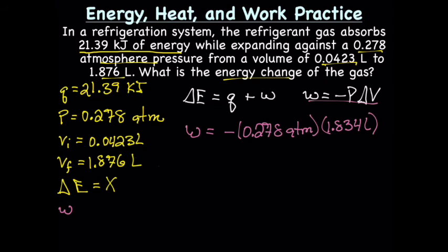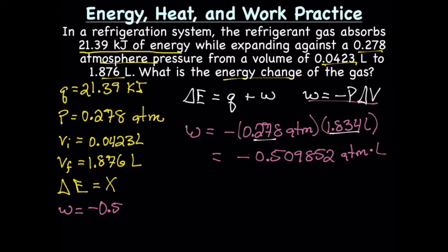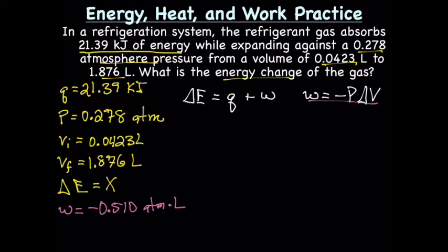Let's make a little space here. Solving for W, we end up with 0.50985252 atm liters. Sig figs, we've got three and four, so three sig figs. So our W is going to be negative 0.510 atm liters. We're almost ready to solve for our energy change. The only problem we have now is that our Q is in kilojoules and our W is in atm liters, so we need to convert.